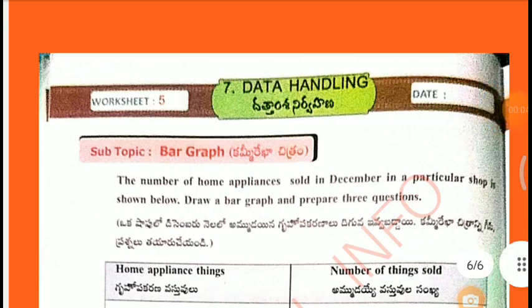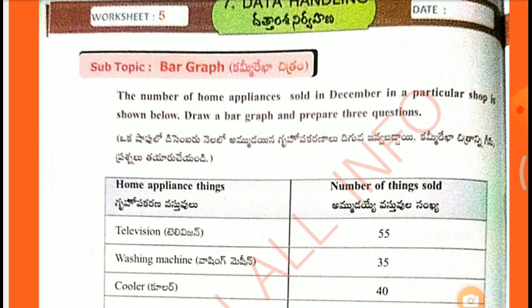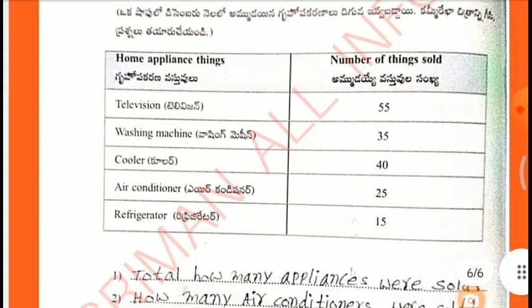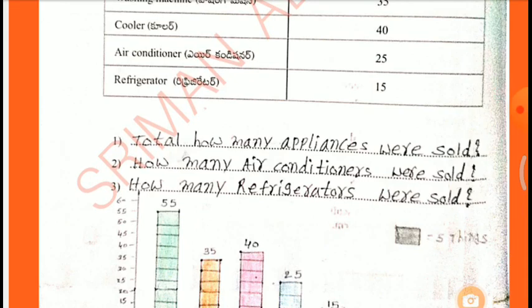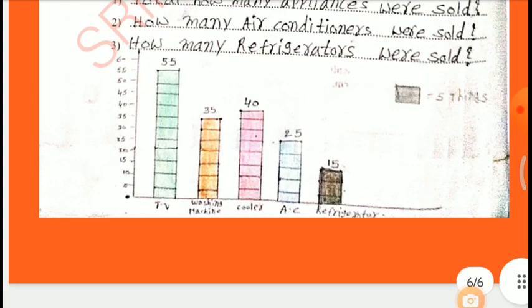Worksheet 5, Sub-Topic: Bar Graph. The number of home appliances sold in December in a particular shop is shown below. Draw a bar graph and prepare three questions. Television 55, Washing machine 35, Cooler 40, Air conditioner 25, Refrigerator 15. Questions: How many total appliances were sold? How many air conditioners were sold? How many refrigerators were sold? One box indicates 5 items.